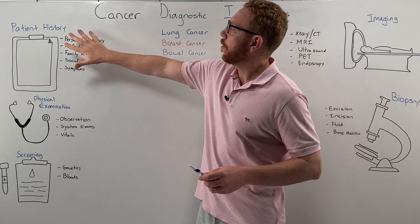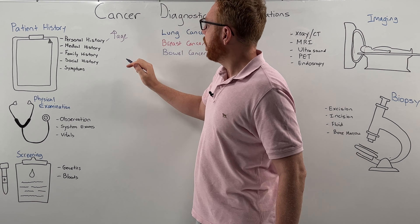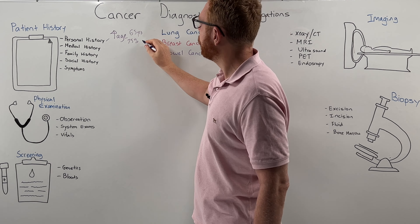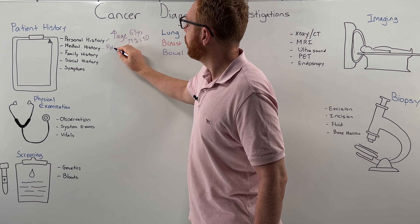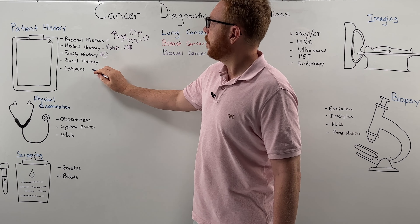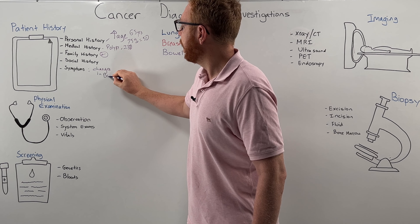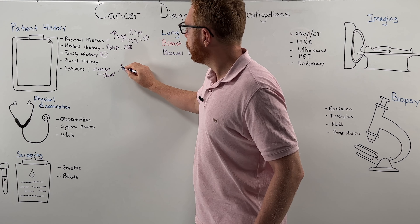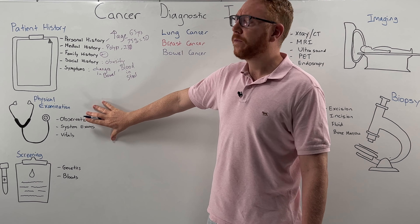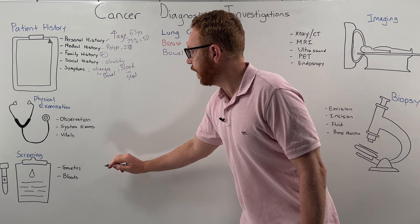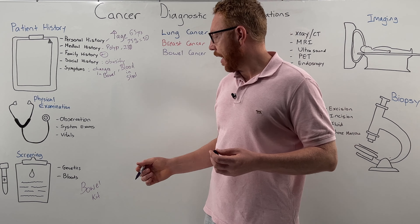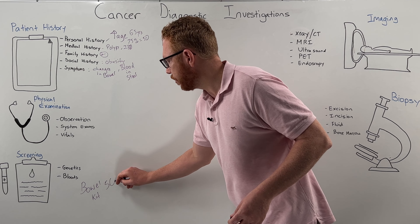Lastly, let's look at bowel cancer. In patient history, increasing age is a risk — the median age is 65, and 75% of bowel cancer patients are over 50. Medical history may include a history of polyps or inflammatory bowel disease, and family history has a strong association. Symptoms include changes in bowel habits such as diarrhoea or constipation, blood in the stool, and obesity as a social history risk factor. In Australia, a good screening tool is the bowel kit, which tests for blood within the stool and is offered to individuals over age 50.